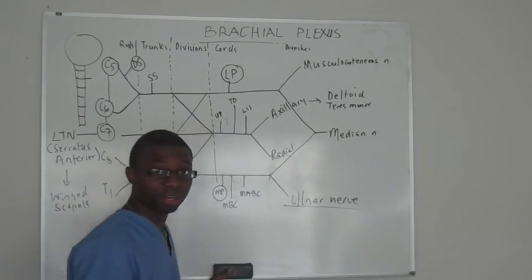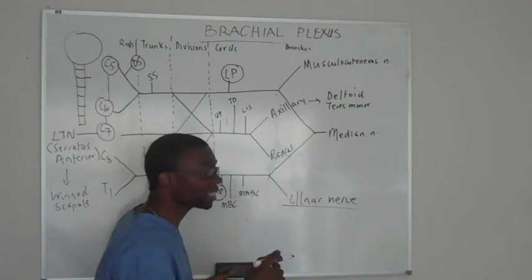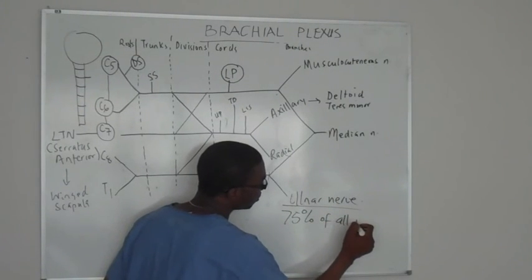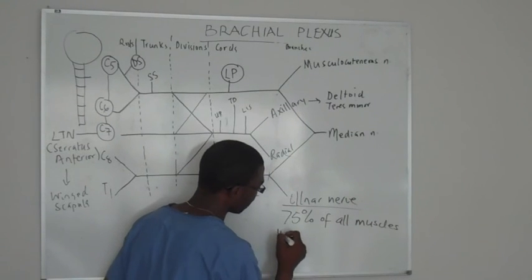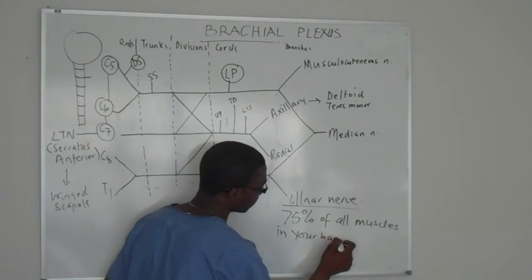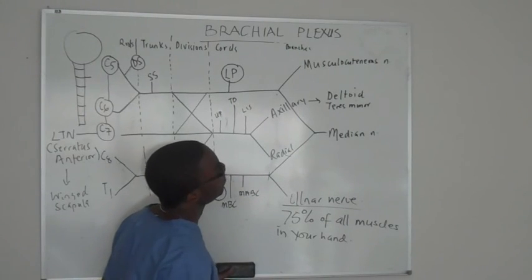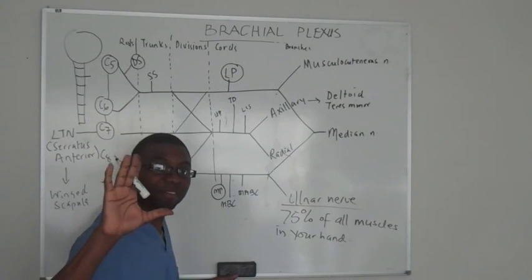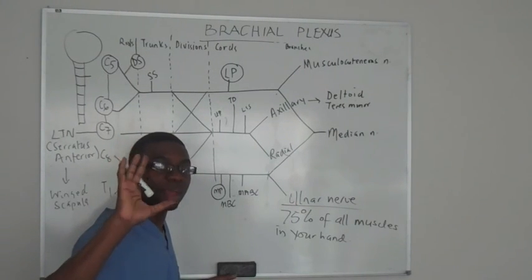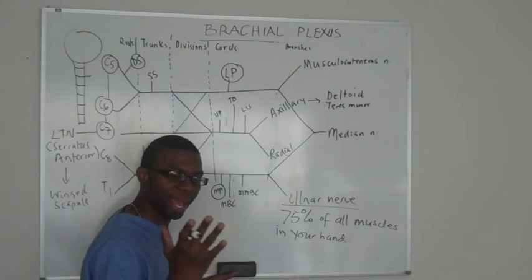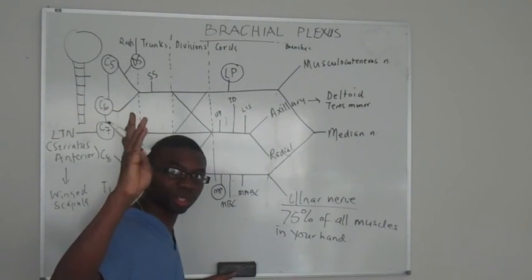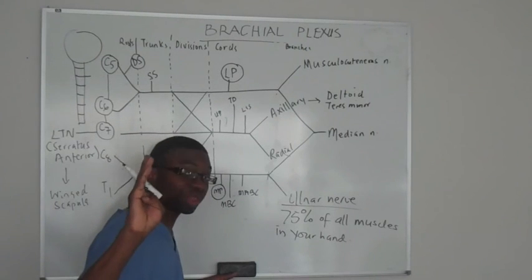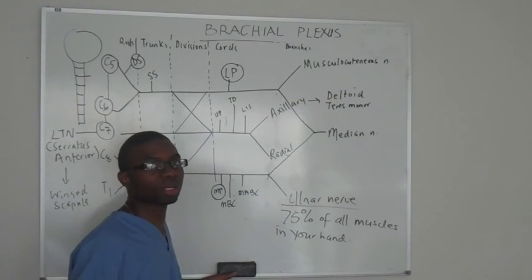Now your ulnar nerve, on the other hand, basically innervates 75% of all muscles in your hand. What you need to know is that the last two lumbricals of your hand and all your hypothenar muscles are all innervated by your ulnar nerve.